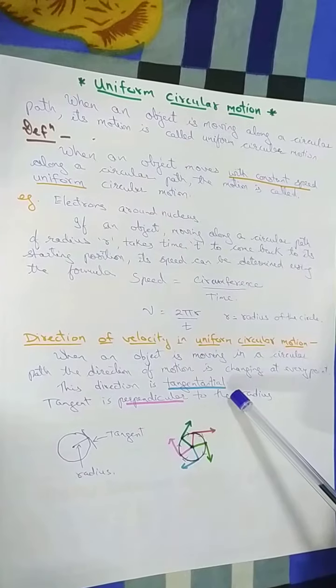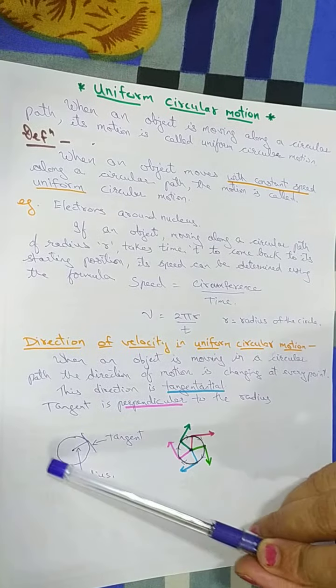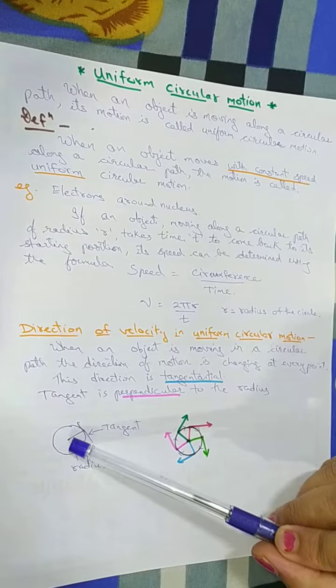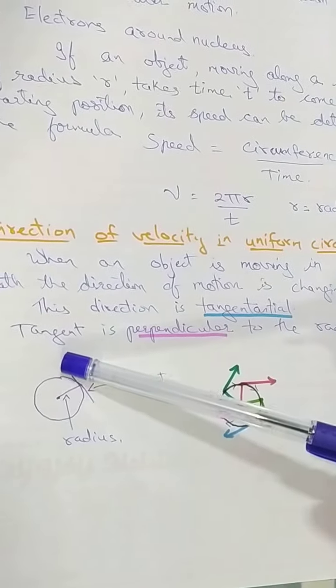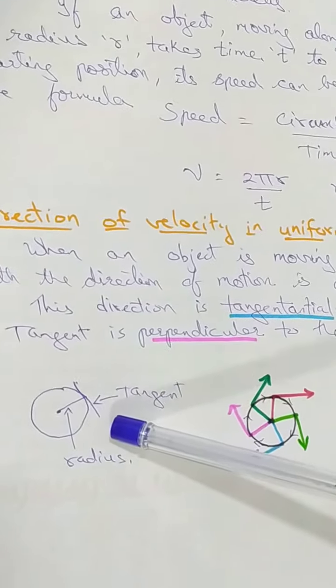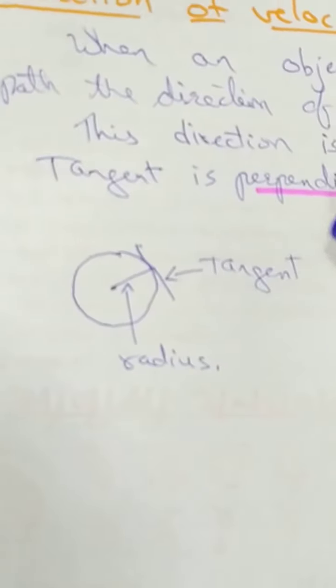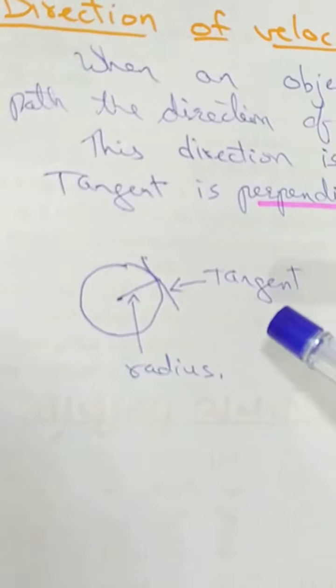Tangential, that is it is like a tangent. Here we have shown a diagram. This is the circle, center and the radius. The perpendicular drawn at any point at the circle is called a tangent. Tangent is perpendicular to the radius and the direction is tangential.